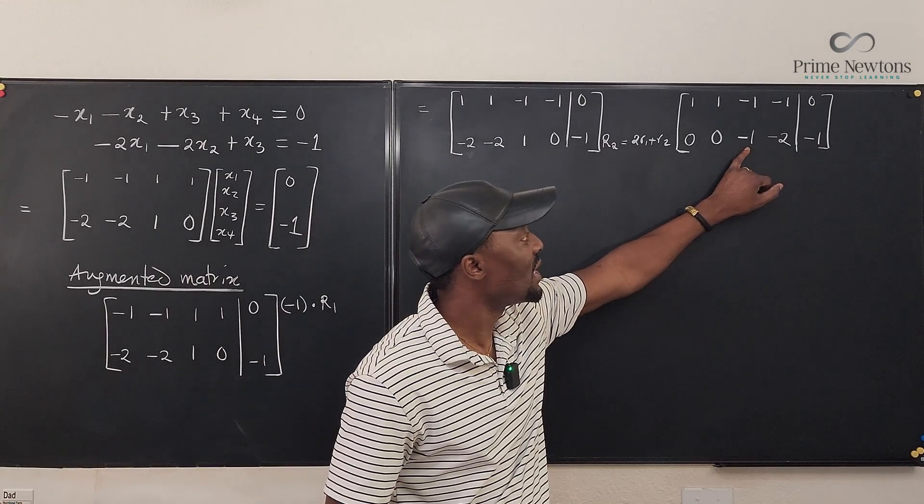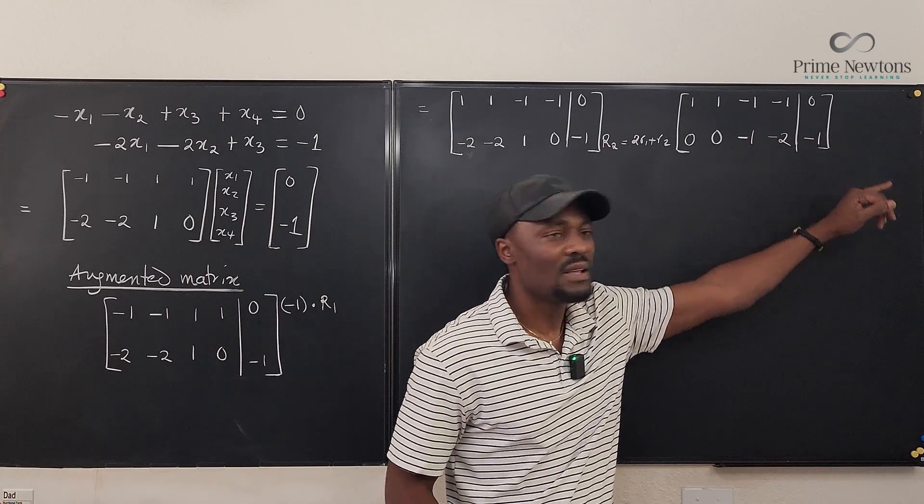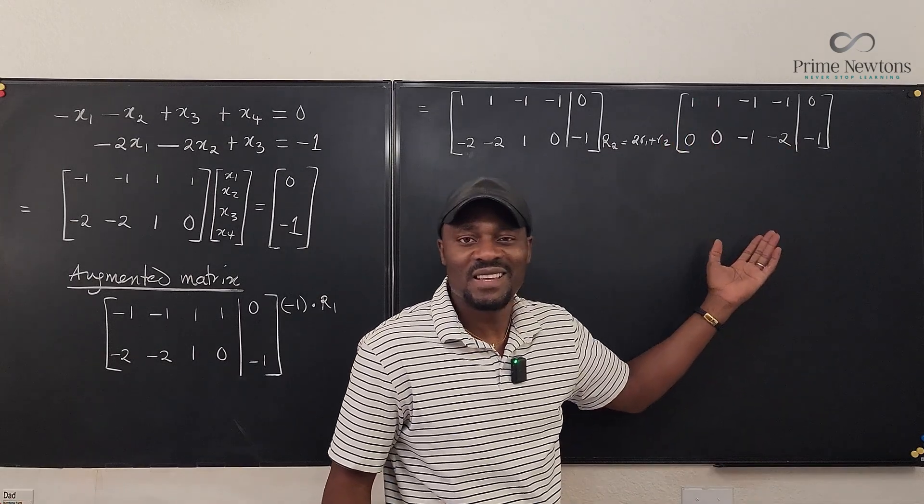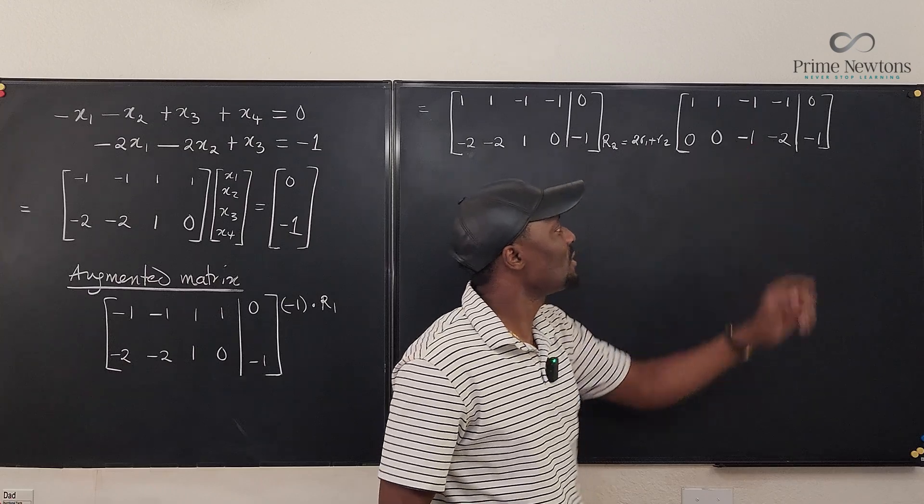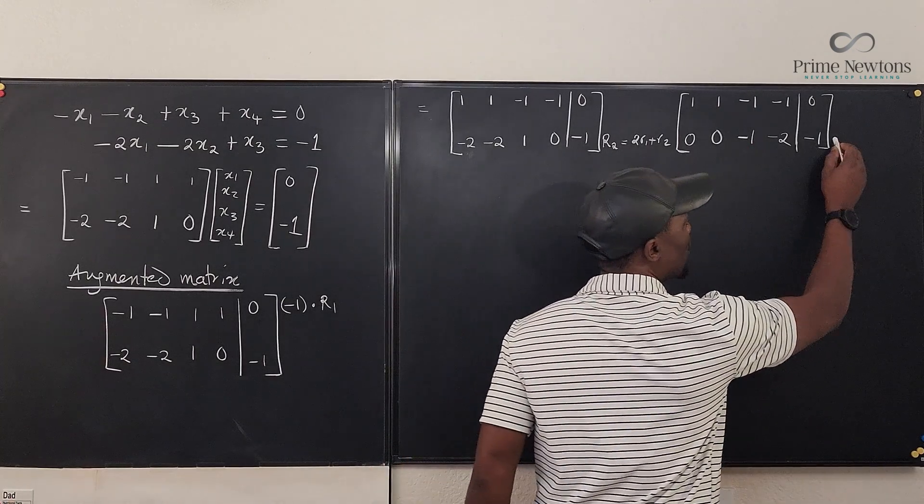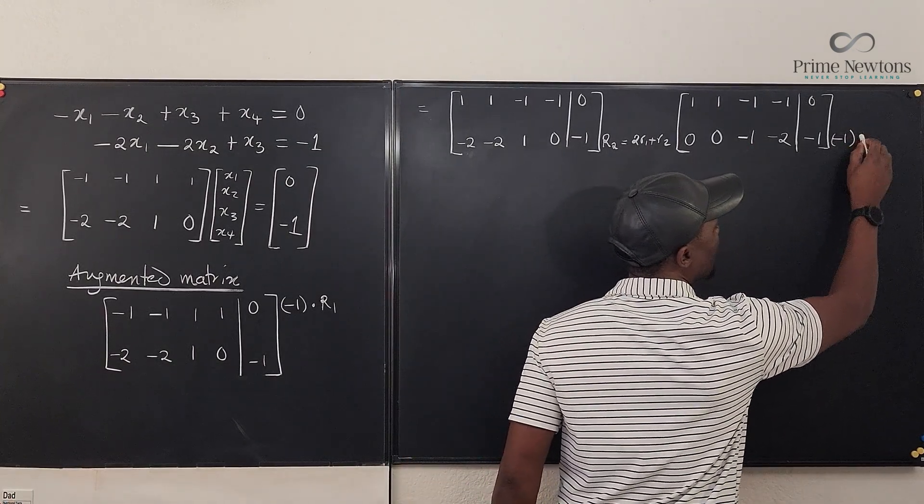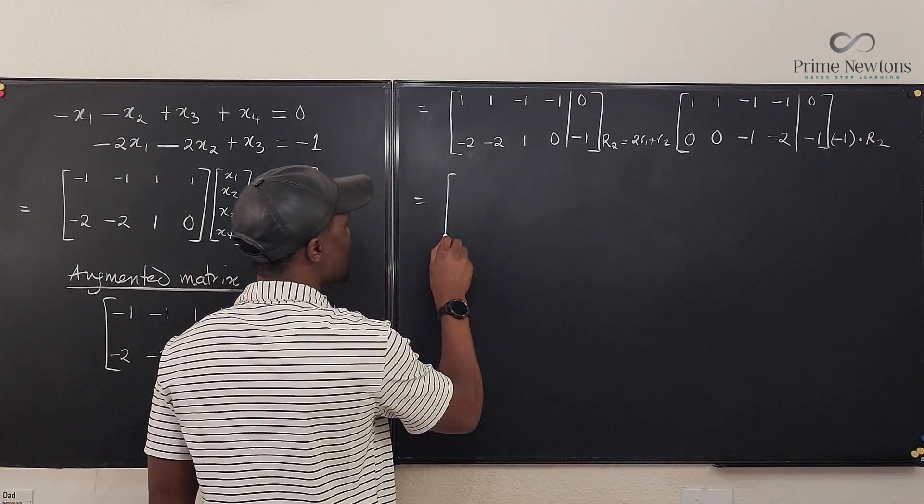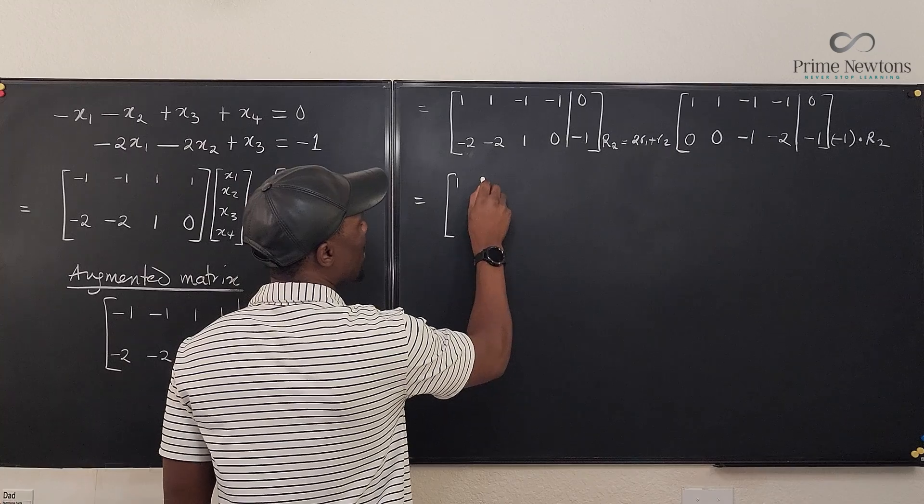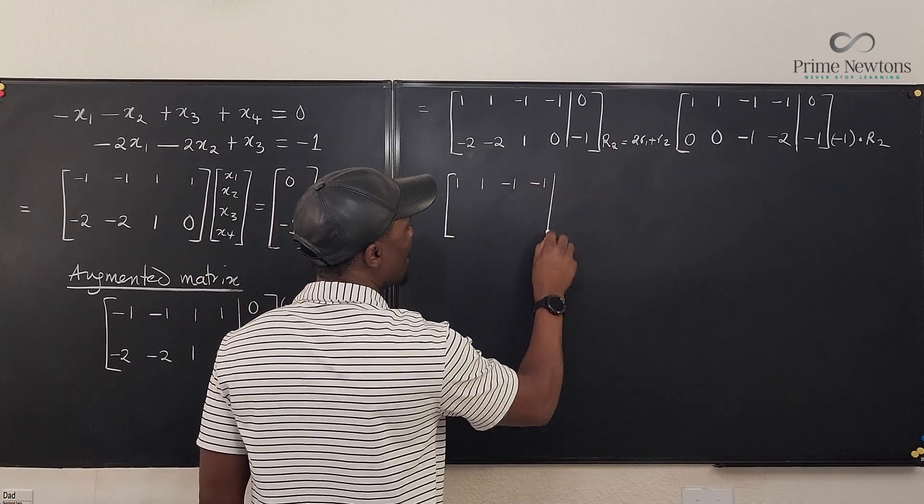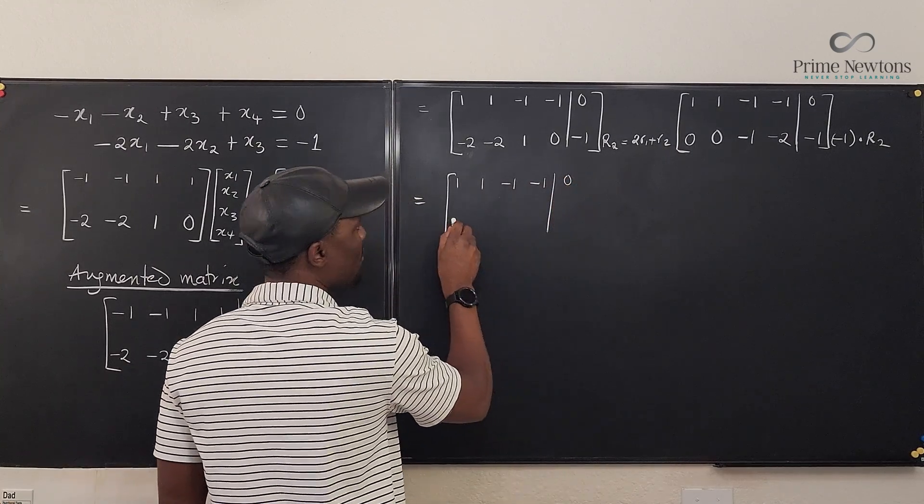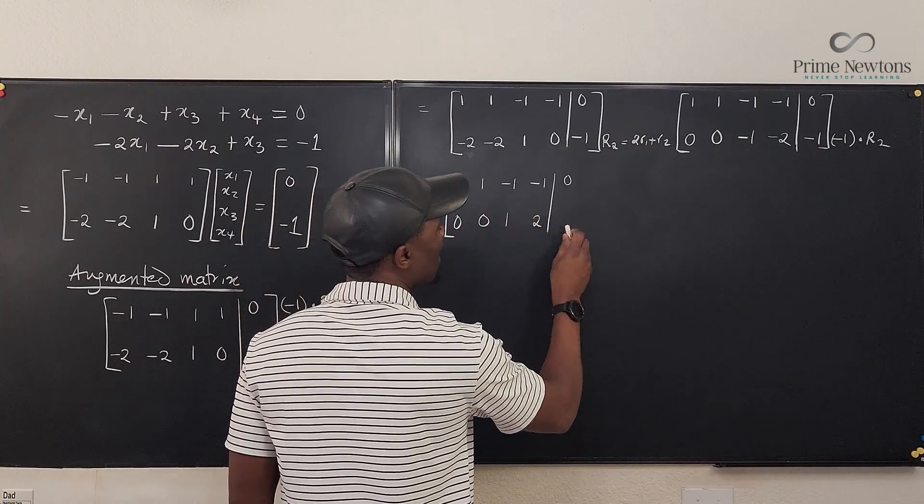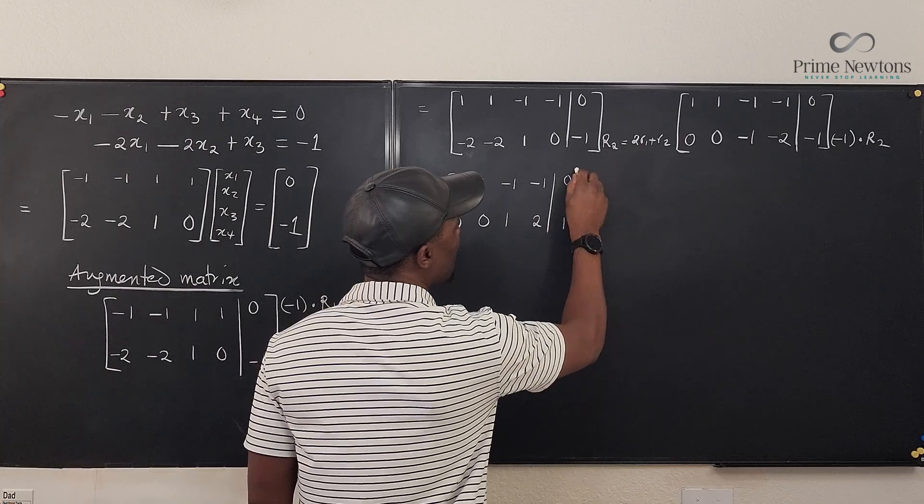Because of this minus one that is here, let's multiply this by minus one. So we get rid of the minus. Minus one times row two. So what we have is going to be one, one, minus one, minus one. And we have zero. And the second one is going to be zero, zero. We have one. We've got two. And this is going to be one.